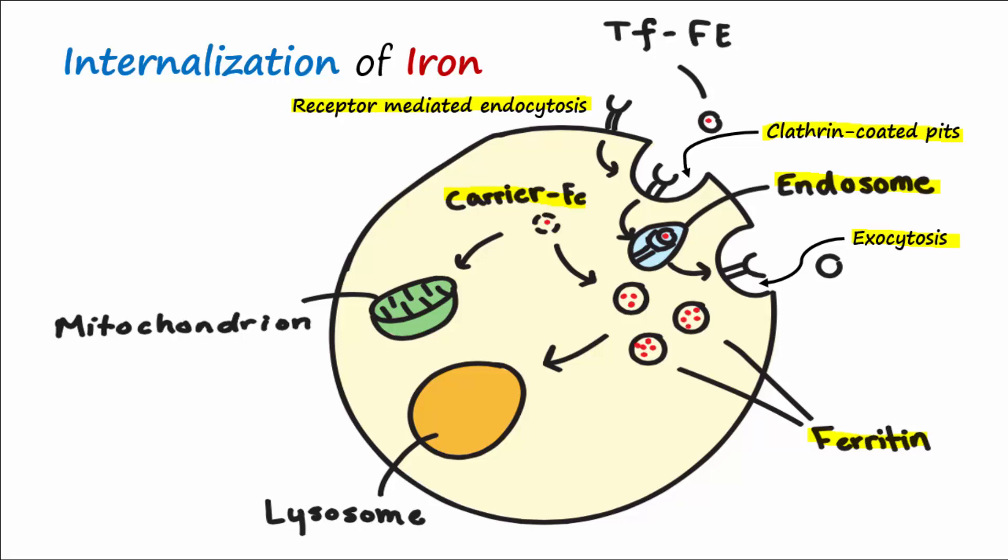Over time, ferritin will complex with other ferritin to form clusters that are digested by lysosomes, leading to the production of hemosiderin, which is a more insoluble form of iron.